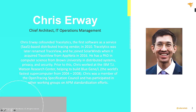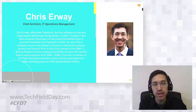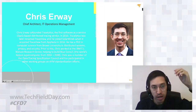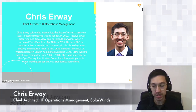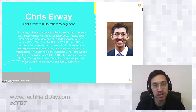Who am I? I'm Chris Urway, the chief architect for IT operations management. I was a co-founder of a company called Tracelytics back in 2010 — it was the first SaaS distributed tracing vendor. It got acquired by SolarWinds in 2016. Before that, I did some anonymity, privacy, and distributed systems research, and before that I worked on large high-performance computing environments. My involvement in tracing also comes from my work with the Open Tracing Specification Council, which was an effort to get standardization around tracing.